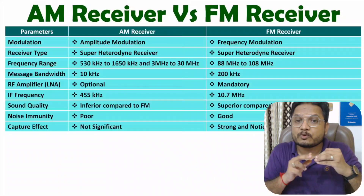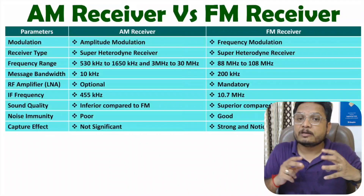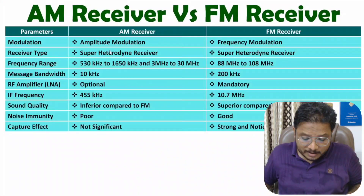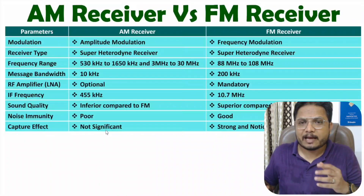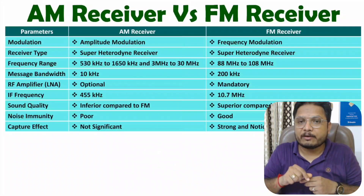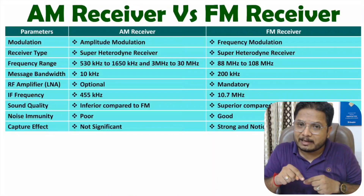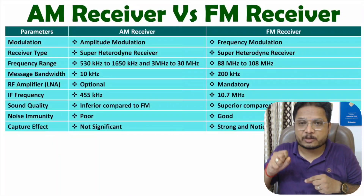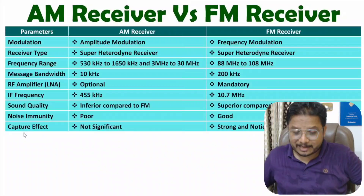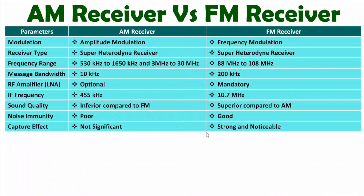In AM receiver, capture effect is not significant because AM receiver cannot separate two signals having nearer frequencies. But in FM receiver, one can reject the weak signal and accept the strong signal, so capture effect is noticeable and strong in the case of FM receiver.